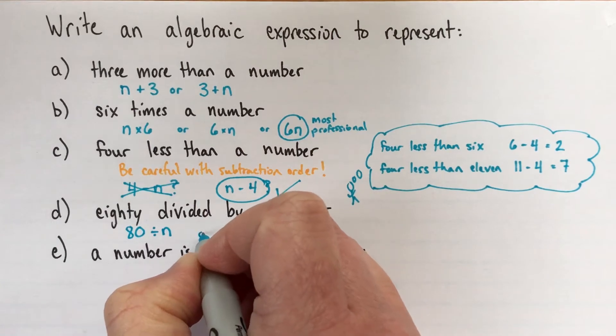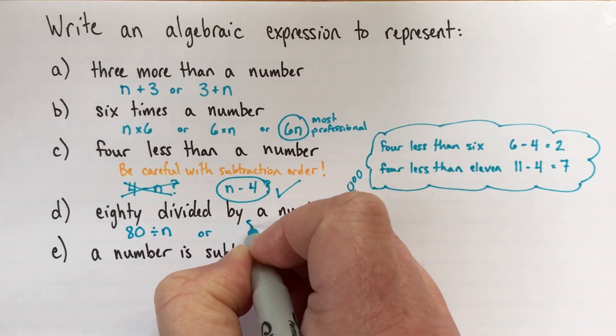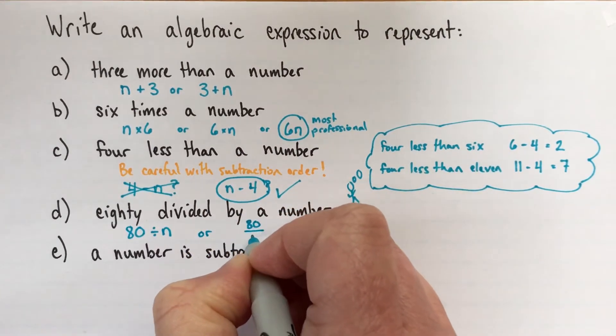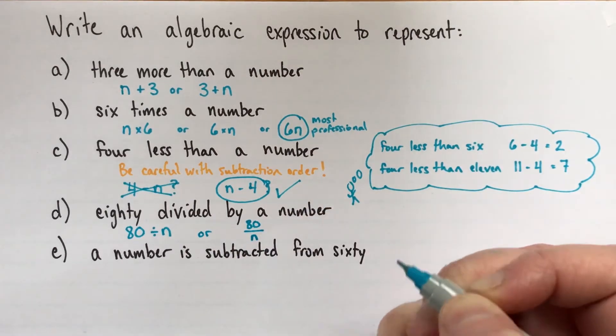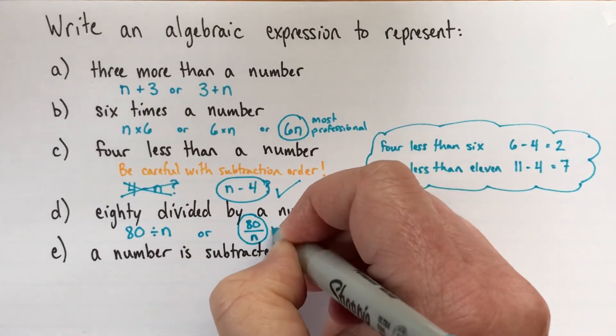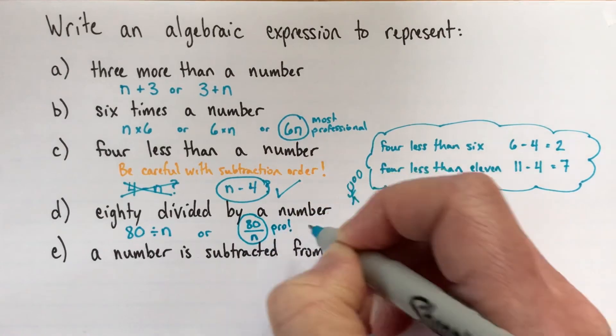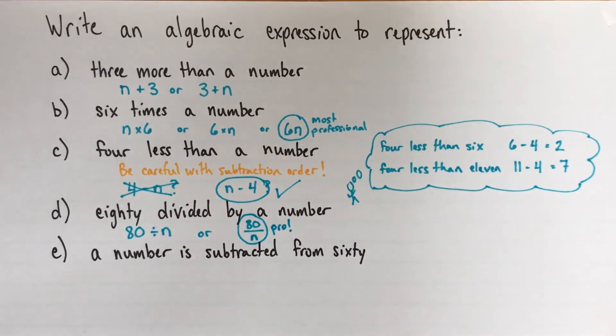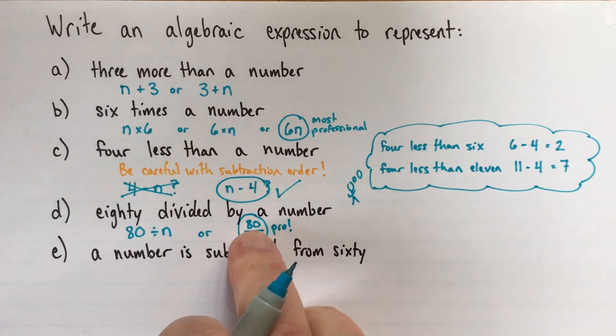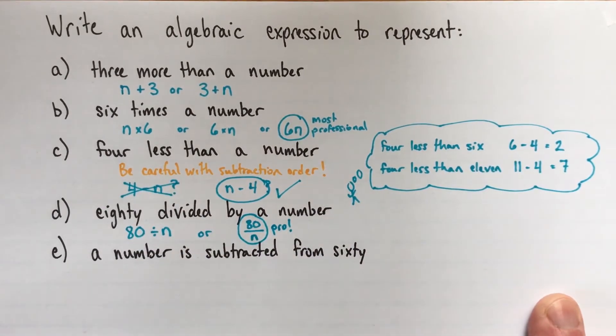So 80 divided by a number. We start with 80, and we divide by a number. And I'll also suggest this way. So this is the same thing. I'm just using this other division symbol. 80 divided by n like that. And this one, I think, is also the most professional. So these ways look really good. This is totally correct, and that, I would say, is even better.